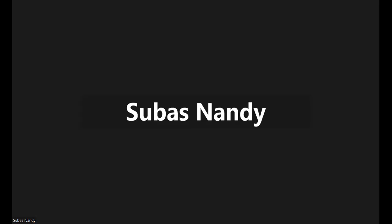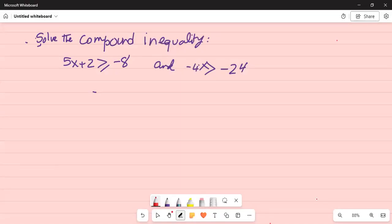We are going to solve a problem on compound inequality. Solve the compound inequality: 5x plus 2 greater than or equal to minus 8, and minus 4x greater than minus 24. We write 5x plus 2 greater than or equal to minus 8, and minus 4x greater than minus 24.